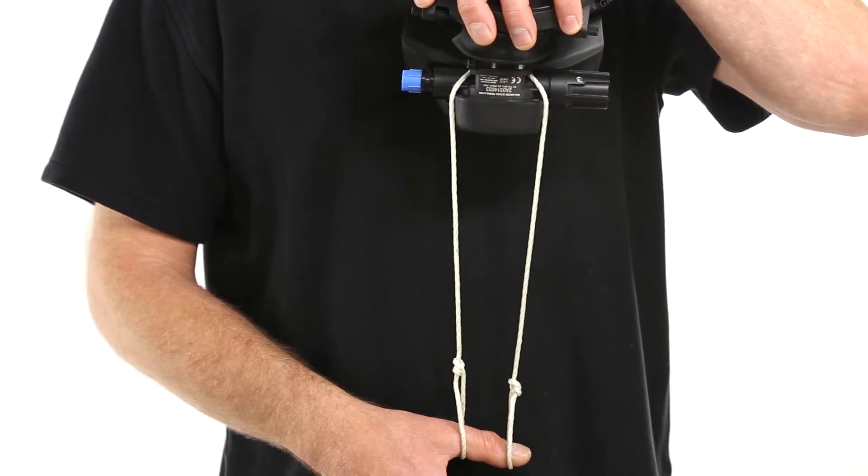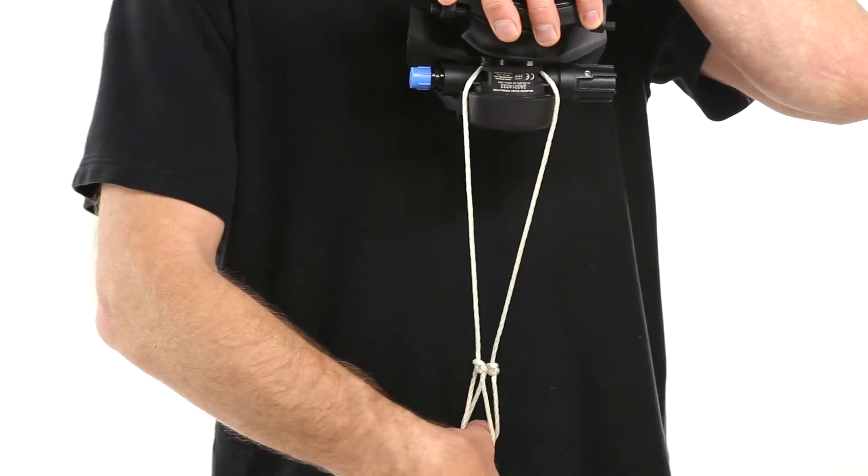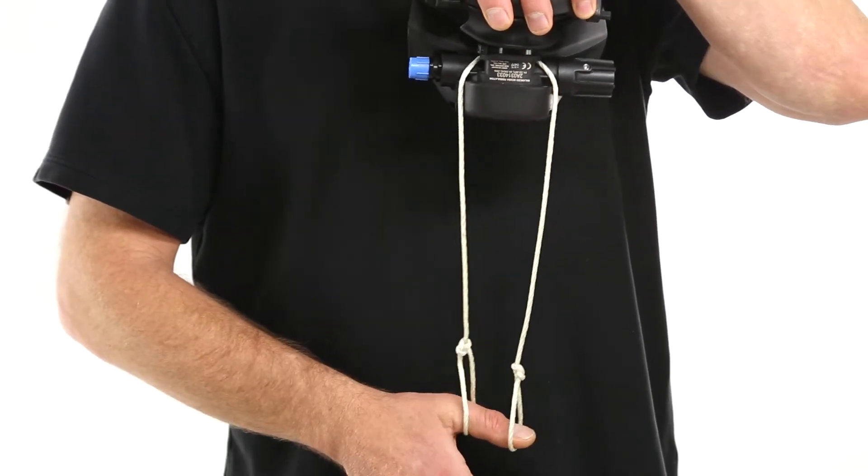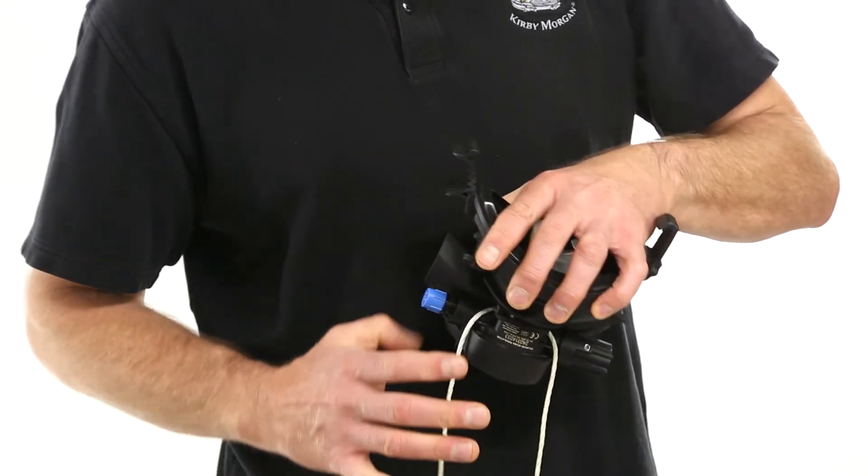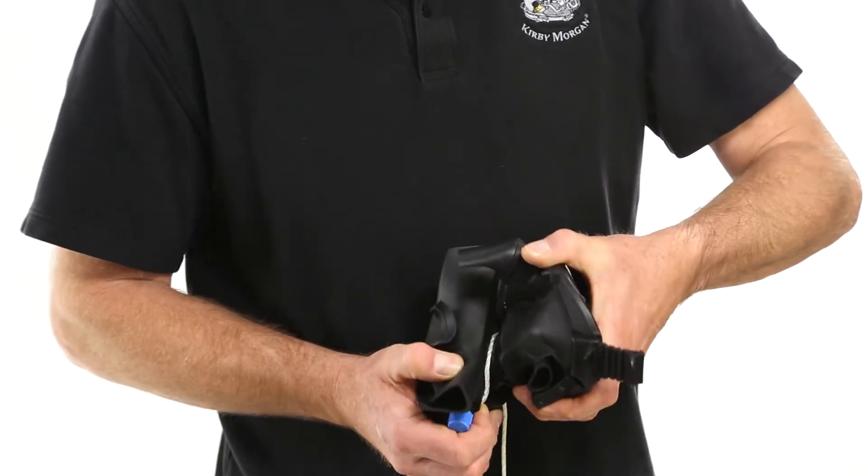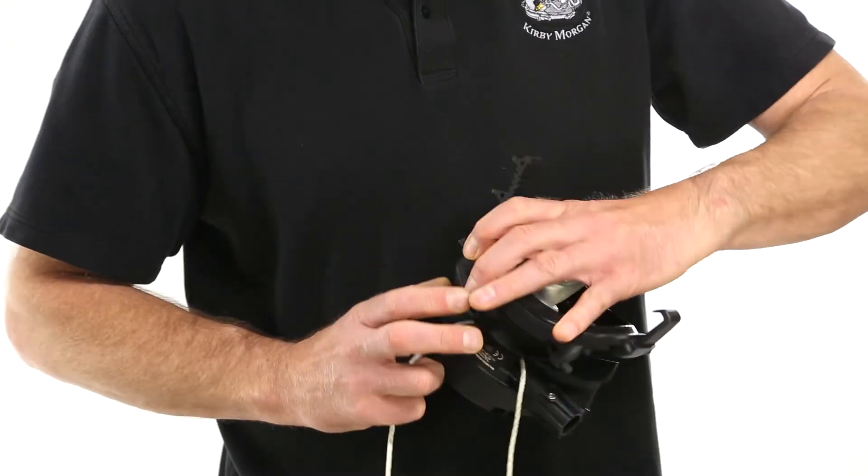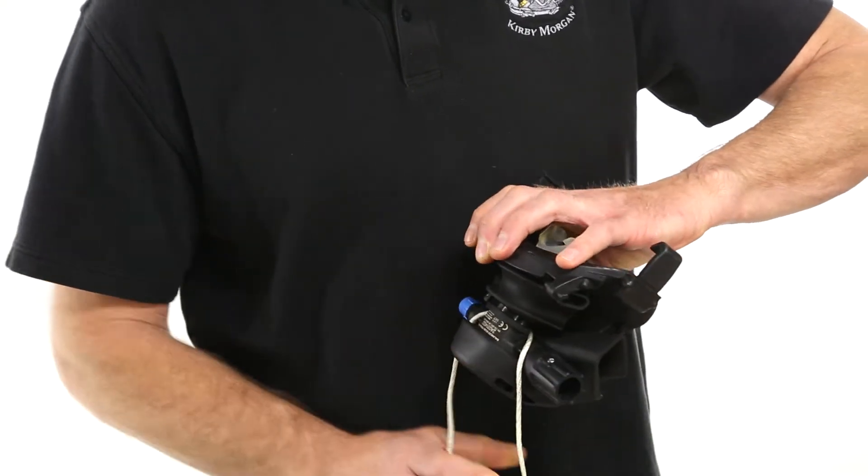First thing you want to do is grab a short piece of line and put two stationary loops on each end. Find the middle of the line and wrap that around the exhaust tee of the regulator. Have the stationary loops facing on the outside of the pod.